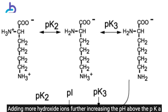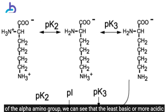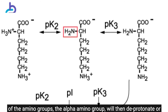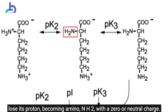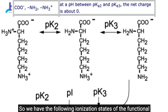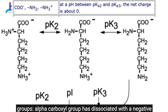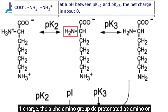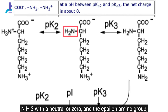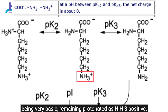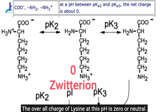Adding more hydroxide ions and further increasing the pH above the pKa of the alpha-amino group, the less basic or more acidic of the amino groups — the alpha-amino group — deprotonates, becoming NH2 with a zero or neutral charge. The alpha-carboxyl group has dissociated with a -1 charge, the alpha-amino group is deprotonated as NH2 with a neutral charge, and the epsilon-amino group, being very basic, remains protonated as NH3-positive. The overall charge of lysine at this pH is zero or neutral — this is the zwitterionic form of lysine.